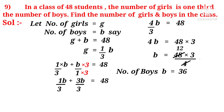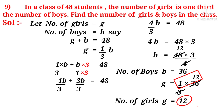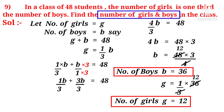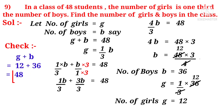Put B equals 36 in G equals (1/3) times B. Then G equals (1/3) times 36, which on simplification gives G equals 12. So, number of girls G equals 12 and number of boys B equals 36. Verification: G plus B equals 12 plus 36 equals 48 students, which matches the problem. So it is correct.